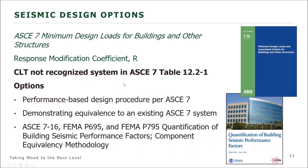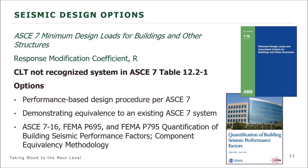Many buildings use CLT as the diaphragm and walls while their vertical lateral resisting system is a prescribed ASCE 7 system, such as buckling restraint brace frames or a moment frame. There are ways to do mass timber construction buildings using these approaches. The last piece we'll talk about today is fire resistance. If wood members meet the minimum sizes in the table in Chapter 23, no additional fire protection is required for Type 4 heavy timber construction.